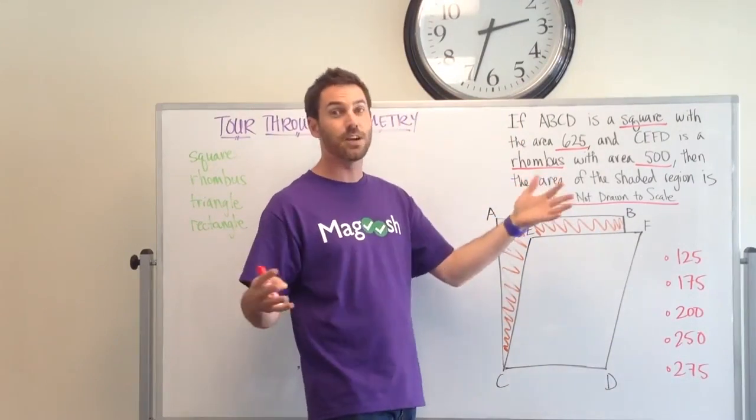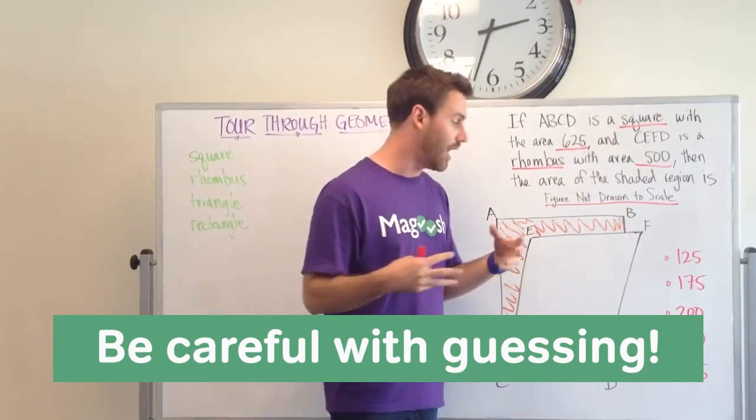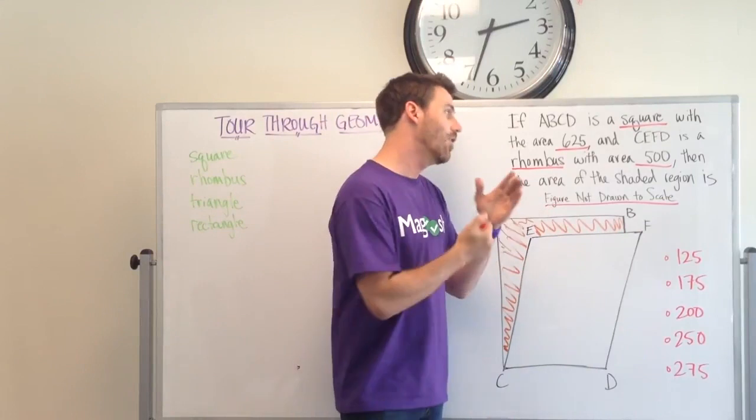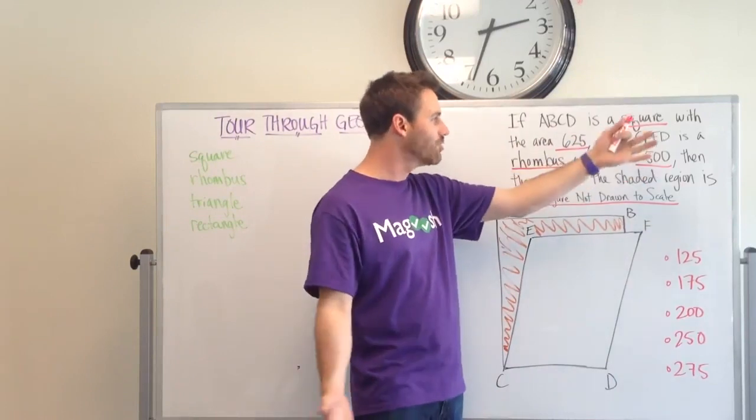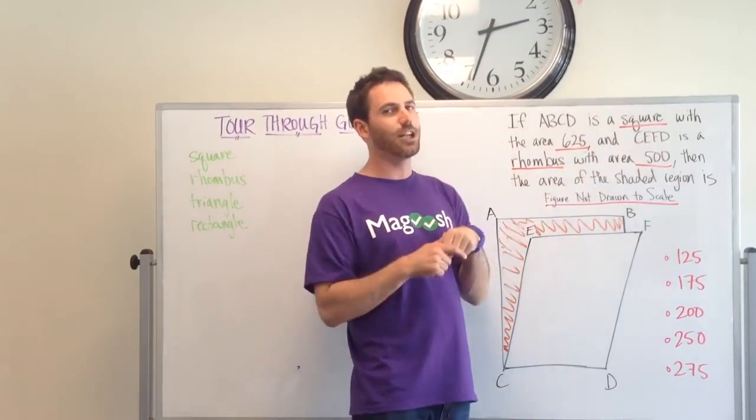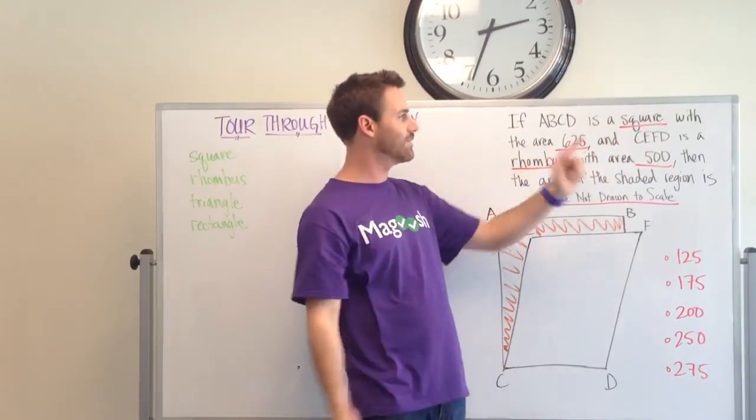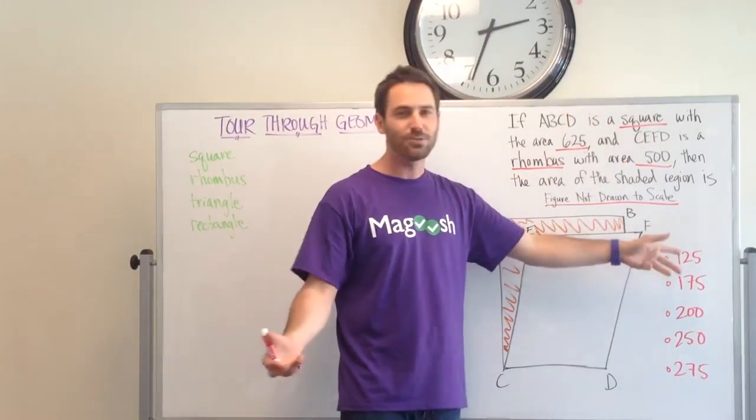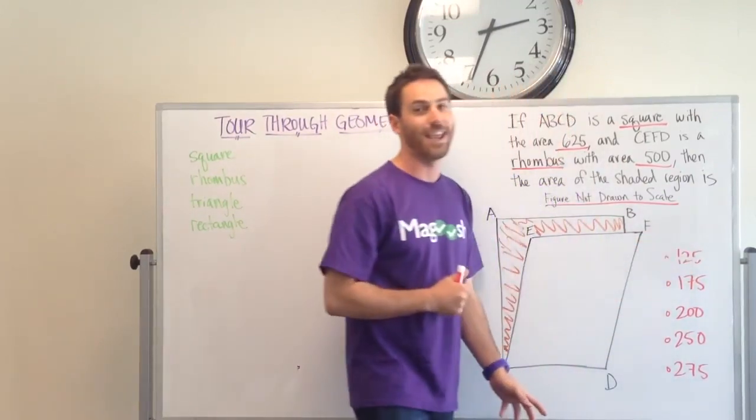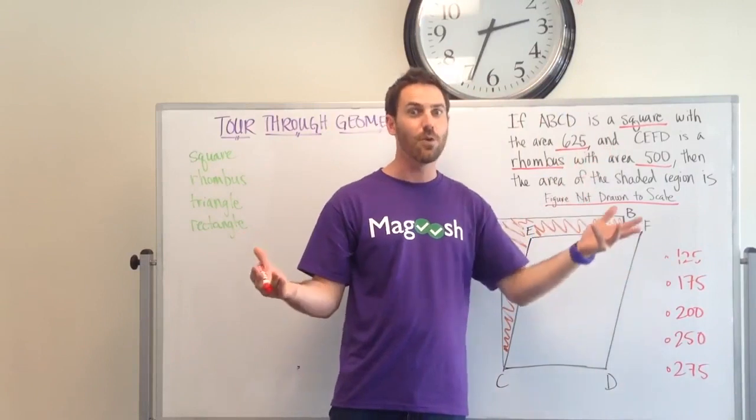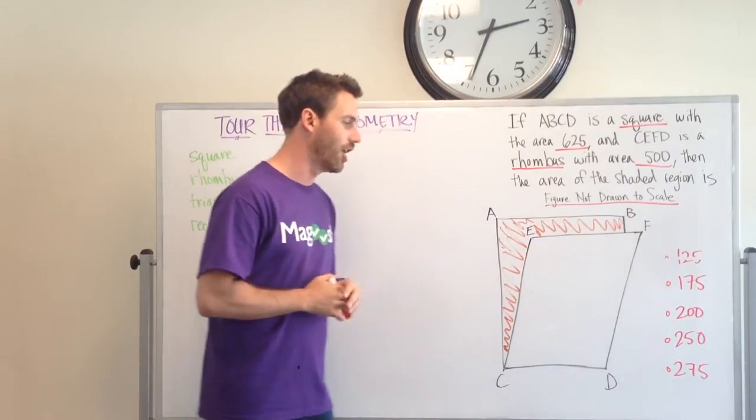Sometimes you're running out of time on the test or you want to catch up and you know you need to move through a question quickly, so you might have to guess. One thing that I would do to help my chances of guessing: I can see 625 and 500 here. Someone who's not thinking very clearly or is rushing might think the area of this part is just 625 minus 500, so it's 125. That is a trap answer right there. You can immediately get rid of that answer choice, and then at least you're choosing from four instead of five answer choices.